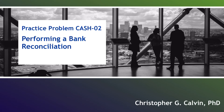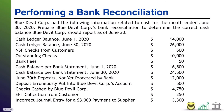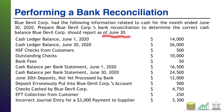Hi, everyone. Welcome to Practice Problem Cash 02. In this one, we are going to perform a bank reconciliation. Blue Devil Core had the following information related to cash for the month ended June 30th, 2020. Prepare the bank reconciliation to determine the correct cash balance they should report as of June 30th.